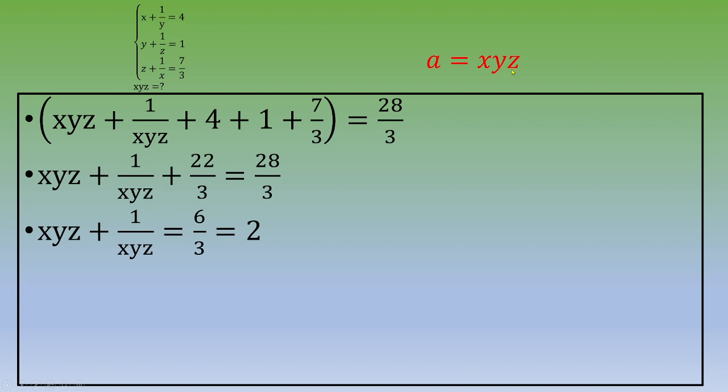So now we have xyz - let's call it a. So we have a plus 1 over a equals 2. If you multiply both sides by a, you will get a squared plus 1 equals 2a.